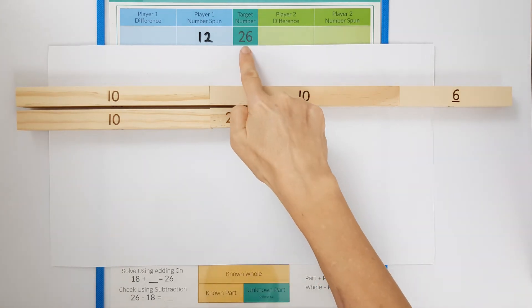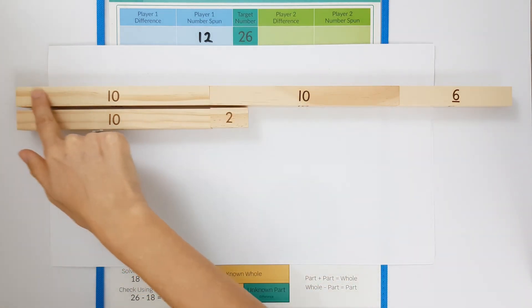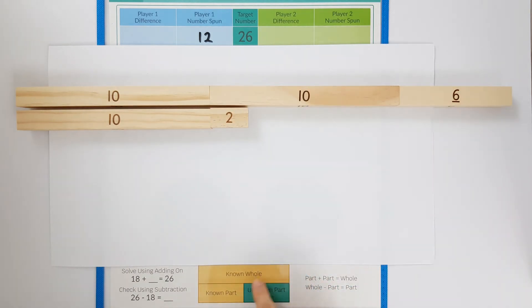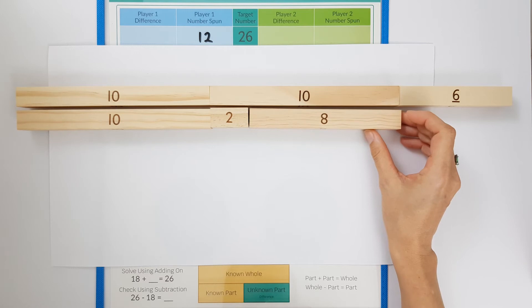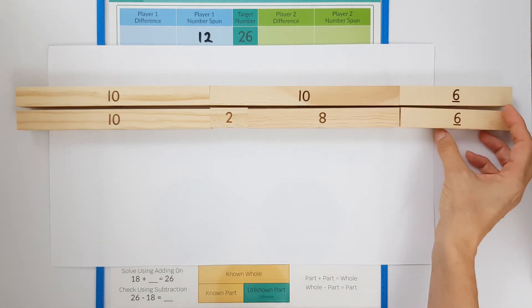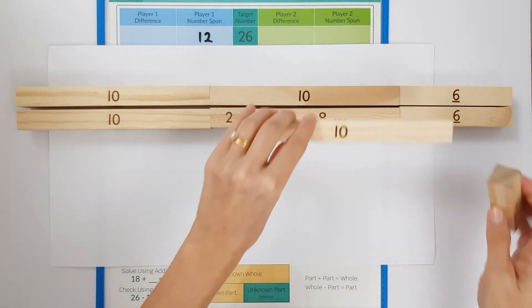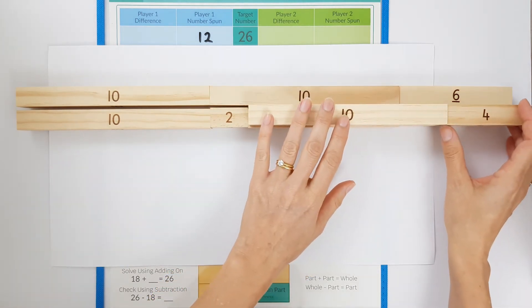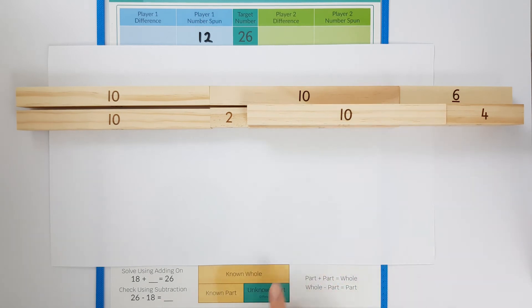For this example the greater set is twenty six so this becomes the whole. The twelve number spun is the smaller set or the part we know. We need to find the difference which is the part we don't know. I'm going to work this difference out by bridging ten. First I'm going to add on eight and then I'm going to add on six. And while I'm doing this I can think eight add six is the same as ten add four. So the difference is fourteen.